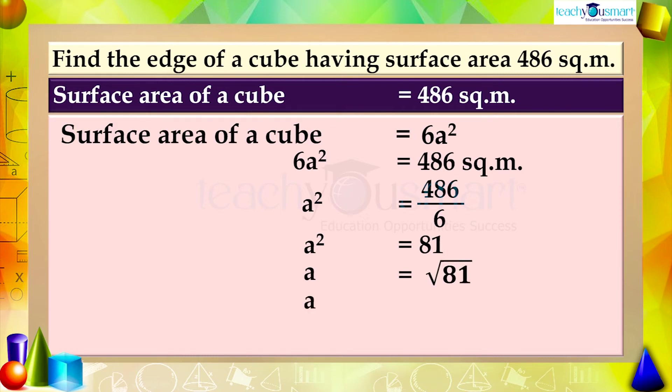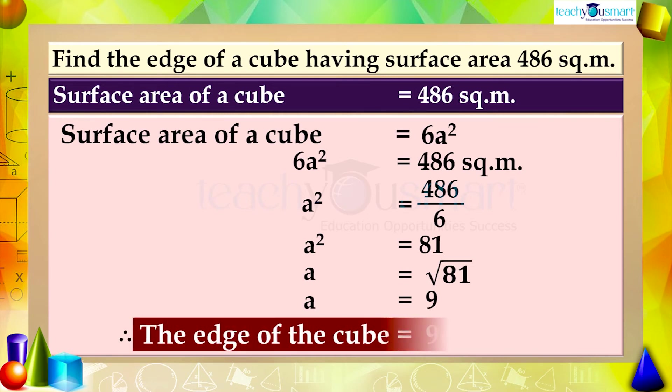Therefore a = √81 = 9. So the edge of the cube is 9 meters.